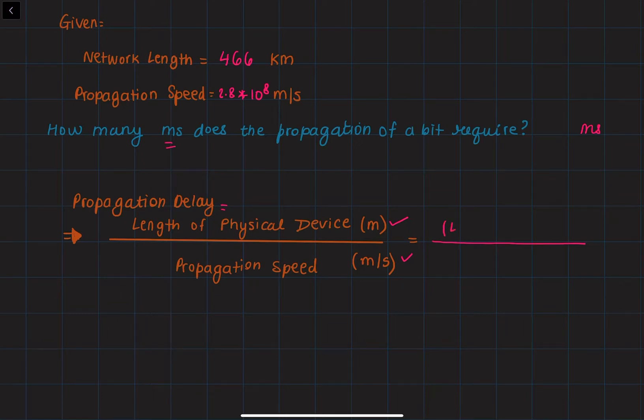We are given 466 kilometers as our network length. We're going to multiply that by a thousand to convert it into meters, and we're going to divide all of that by 2.8 × 10^8 meters per second. This will give us a numerator of 466,000